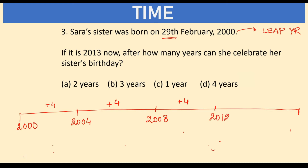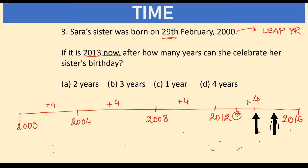The next leap year after 2013 is 2016. If it is 2013 now, counting forward: 2014 is 1 year, 2015 is 2 years, and 2016 is the 3rd year — which is when her sister's birthday falls. So she needs to wait, option A, 3 years to celebrate her sister's birthday, which will fall in 2016.